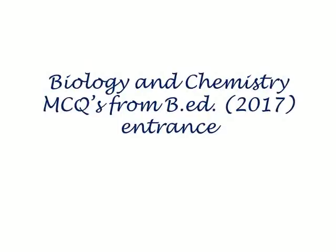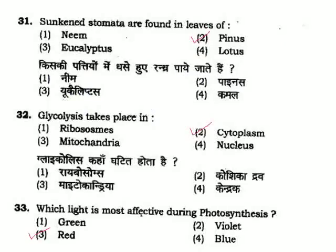Biology and Chemistry MCQs from B.A. Science Interns 2017. Question 31: Sunken stomata are found in the leaves of — sunken stomata are found in pinus leaves because it is a xerophytic plant.